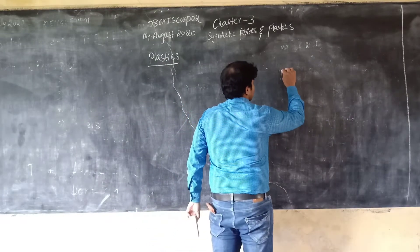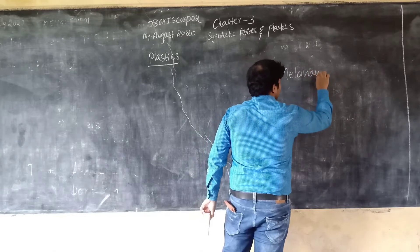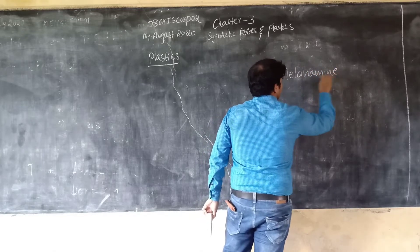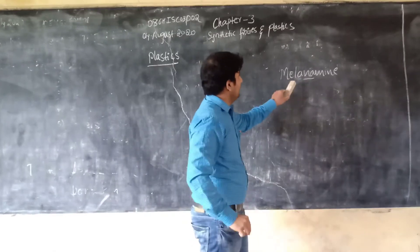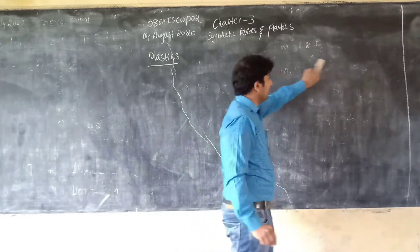The examples of thermosetting plastics - that example is melamine. I forgot to write it, so this is melamine in the thermosetting process.